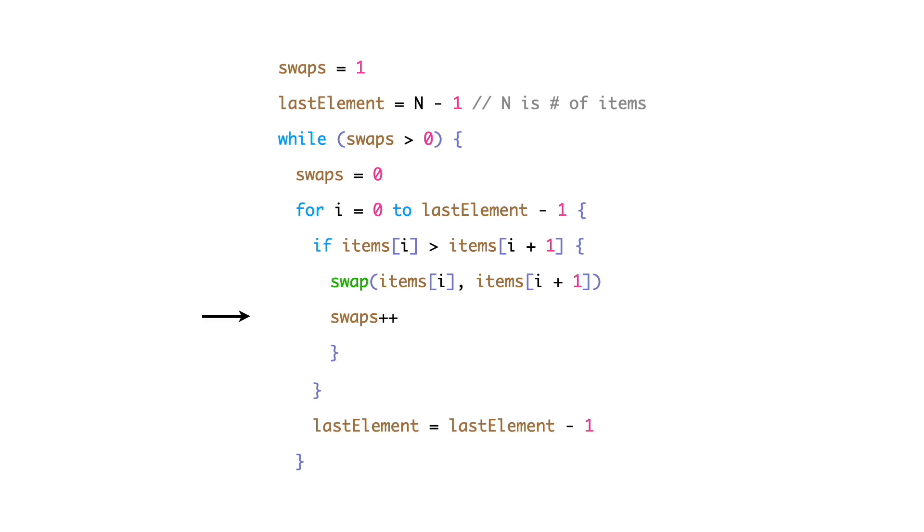We also need to keep a count on the number of swappings. Increment the variable swaps after each iteration. Finally, we need to decrement the variable last element after each iteration. The number of elements in the unsorted array decreases by 1.